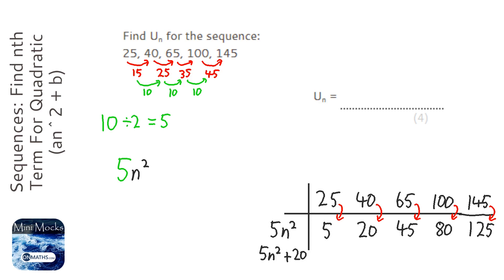And you will notice that all we need to do is add 20 to each term in our sequence. So if we add 20 to 5, we get 25—success. If we add 20 to 20, we get 40. If we add 20 to 45, we get 65, 100, and 145—so success.